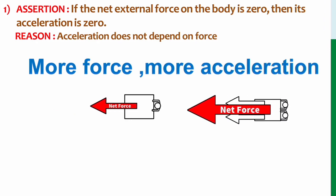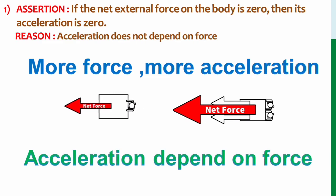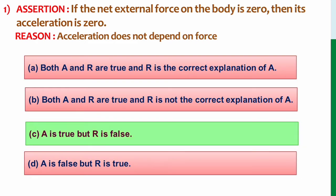And assertion: if the net external force on the body is zero, then acceleration is zero. It's true because we know that acceleration depends on the force. So the correct answer for this question is option C, A is true but R is false.